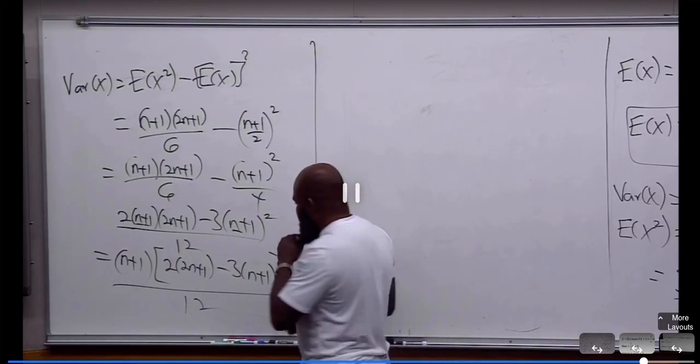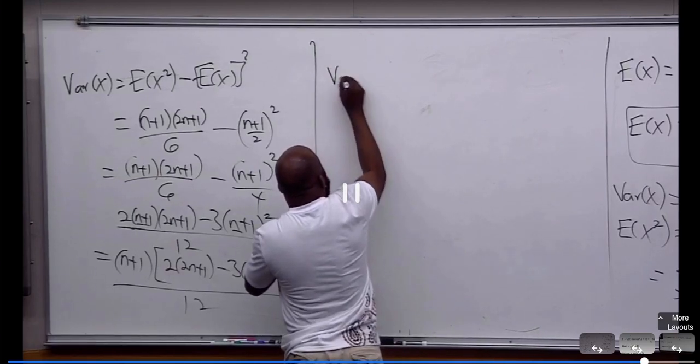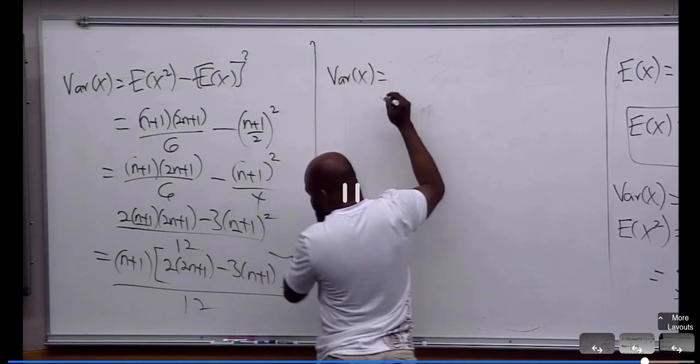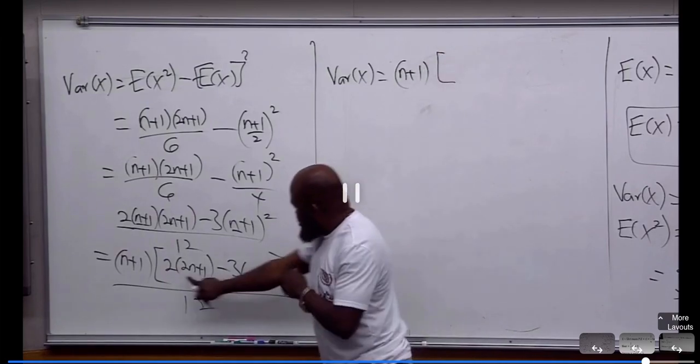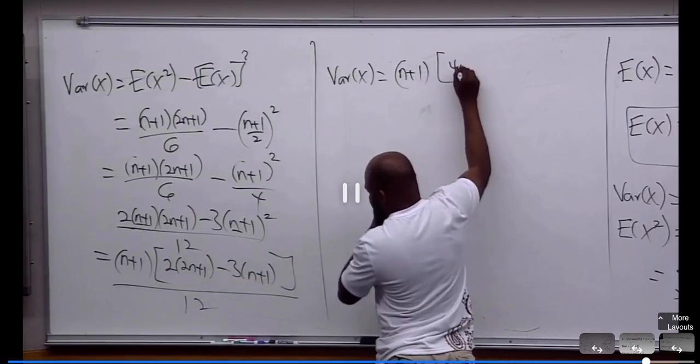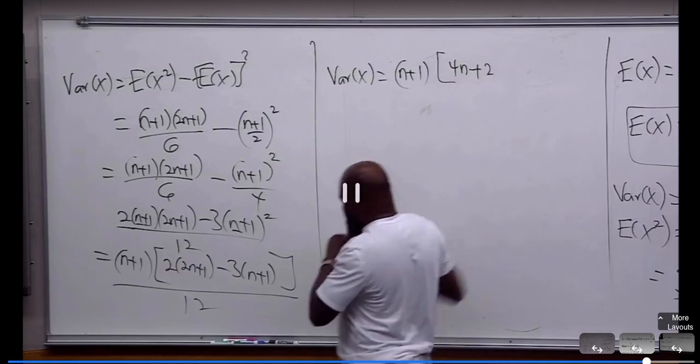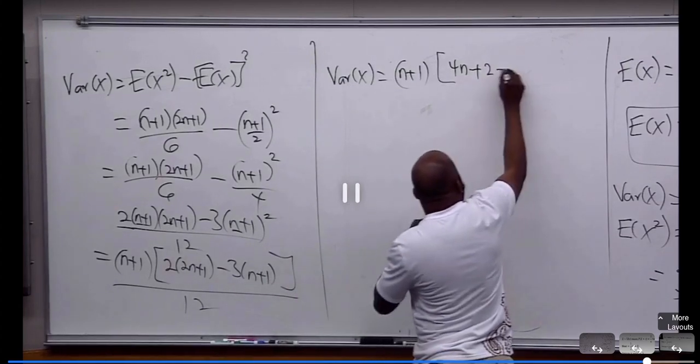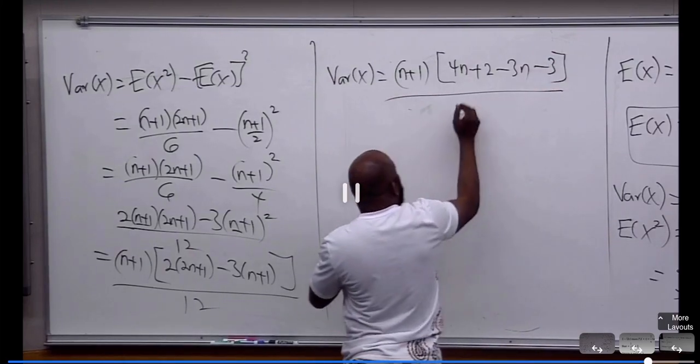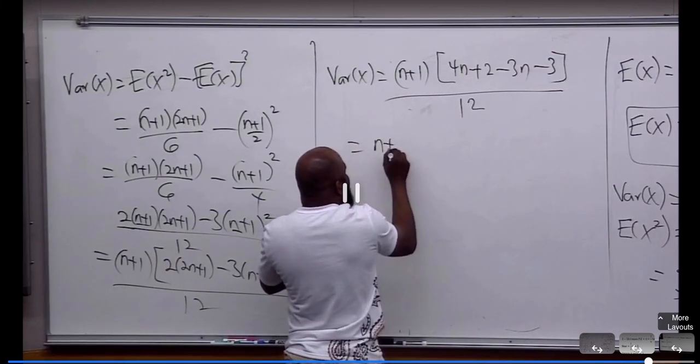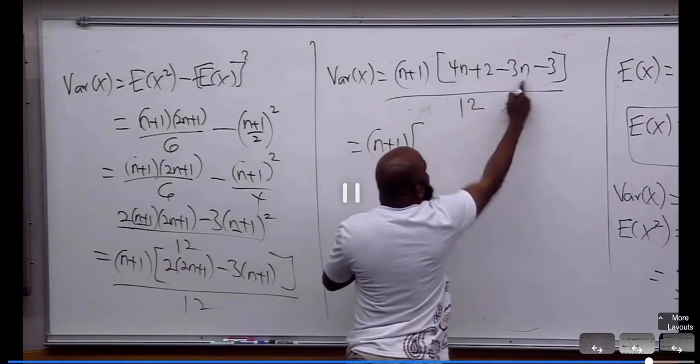So right here, the variance of S is (N+1) into 4N plus 2 minus 3N minus 3 divided by 12, which equals (N+1)(N-1).